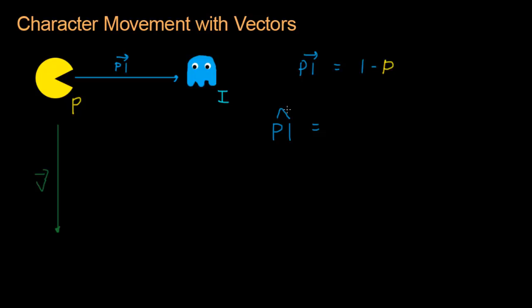And we can calculate PI hat very easily by taking the PI vector, the full length vector, and dividing it by the length of itself. So if PI has a length of five, then you divide it by five to get the normal length vector.